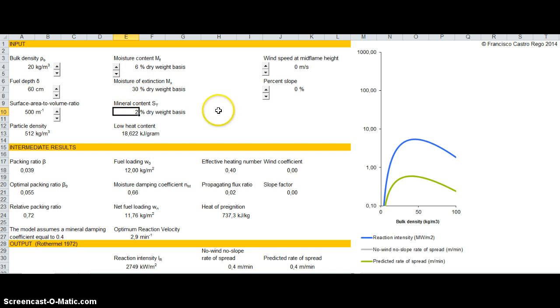You can also look at mineral content. With higher mineral content, you will also have a certain decrease in the reaction intensity and the rate of spread. Also, the low heat content, you can play with it.